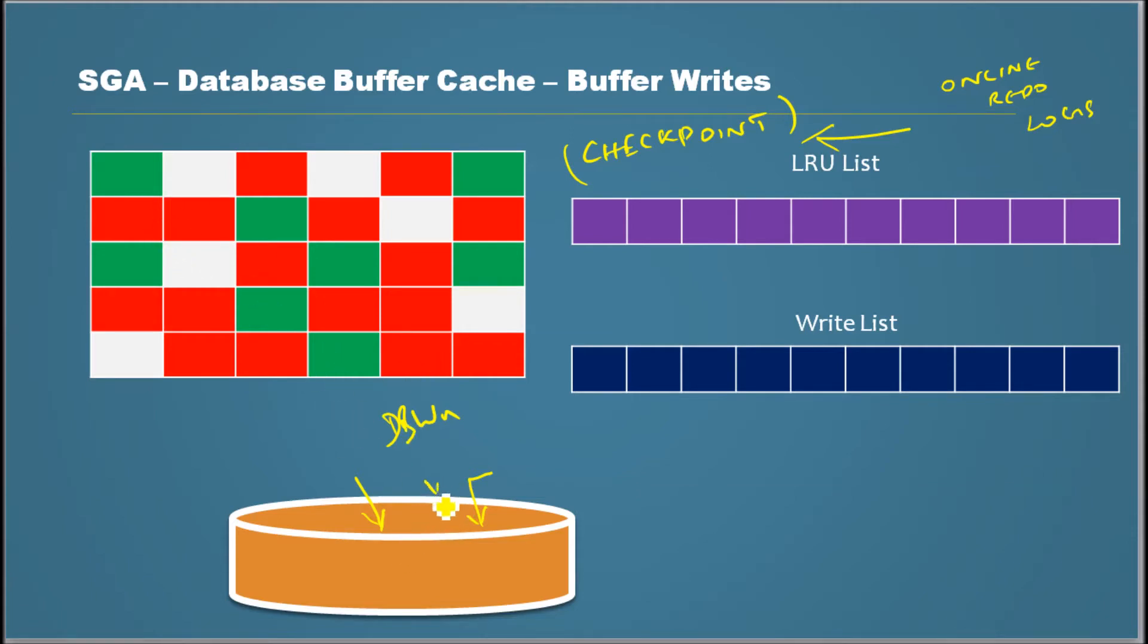Remember that in the previous case where if it goes below certain threshold in terms of free blocks, or if it goes above the threshold in terms of dirty blocks, then data gets written to the data files whether it's committed or not. That's very important - whether it's committed or not. And also during a checkpoint the data gets written.